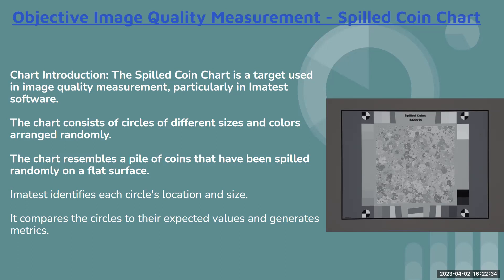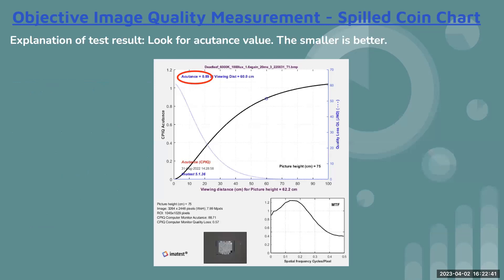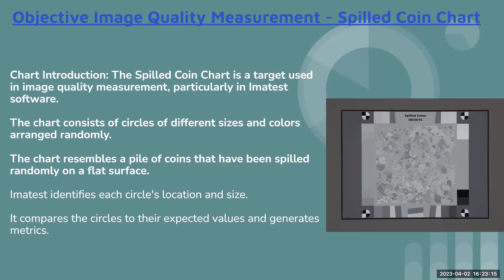It depends on the use case of your camera — if the use case demands it, you can choose the color spill coin as well. Once you do the measurement, you need to look at the equitance values in the graph, where lower is best. Some values from IMATEST output are best when higher, some when lower. I'll show you how to measure it, how to select the ROI, and the meaning of those things, including the center components and the four SFR quadrant components.